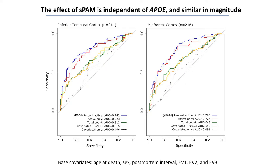Adding active microglia only increases accuracy by another 11%, but the SPAM score boosts prediction to about 76% accuracy. A model including APOE, covariates, and the SPAM percent active microglia measure can predict post-mortem Alzheimer's disease in this cohort with 76% accuracy. The microglial activation and APOE effects are independent and additive, increasing prediction quite dramatically.